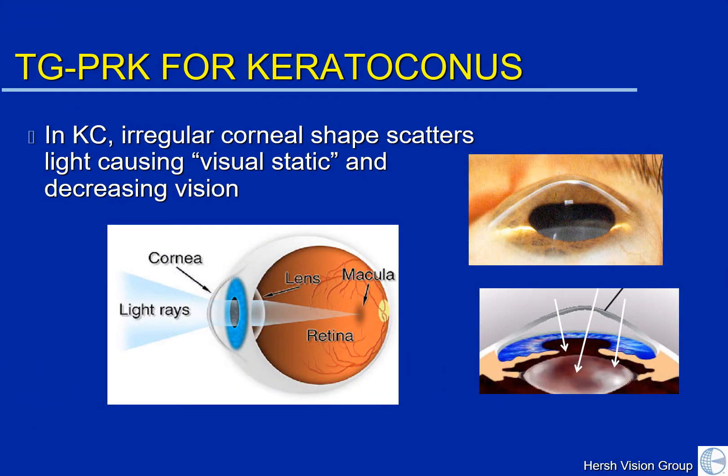In KC, you remember, there is an irregular corneal shape. So rather than having a nice, clear, dome-like watch glass shape, as we see on the left side here, the cornea in KC is irregular, typically with deepening inferiorly and some flattening up top. This causes visual static — that is, light is not focused to one point — thus diminishing the quality of your vision.